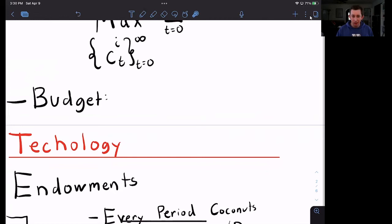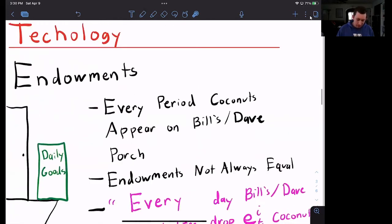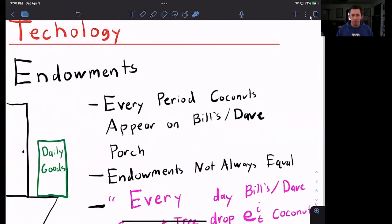There are endowments in this economy. What are endowments? It just means that every day Bill and Dave wake up and they open their door and they see a box of coconuts outside on their porch. And that is what they have to either eat or trade with. Now, the box does not have to contain the same number of coconuts every day, and it doesn't have to be equal between Bill and Dave.